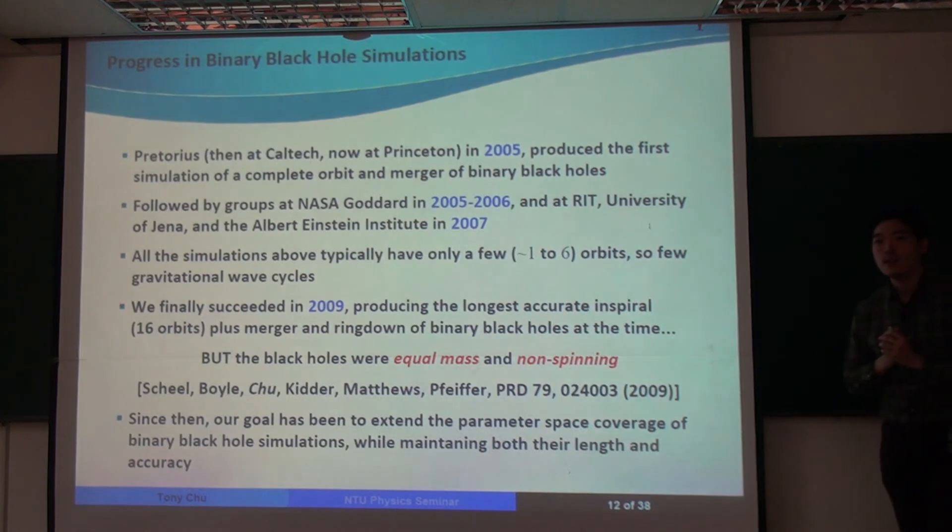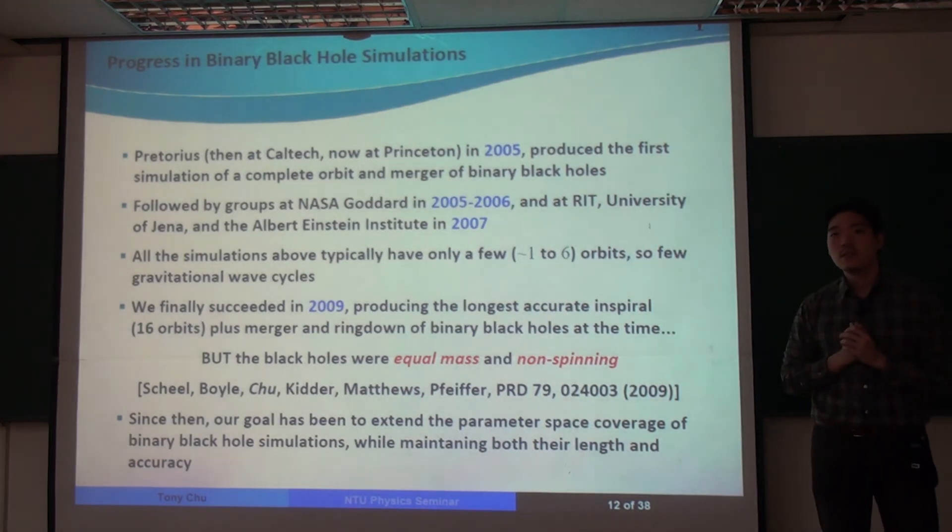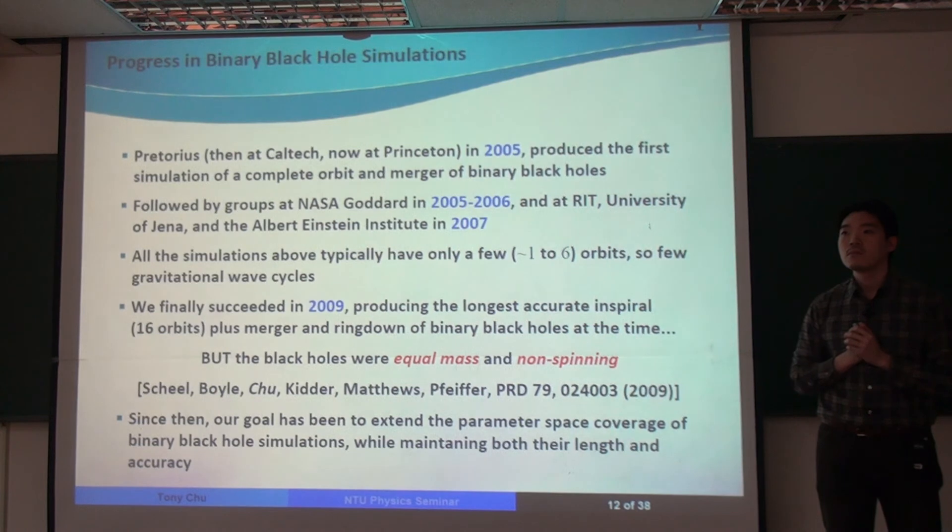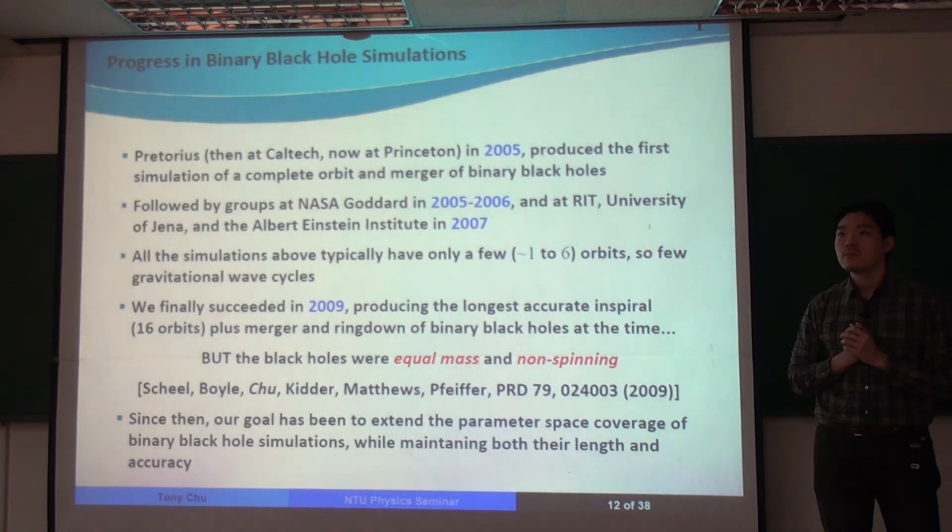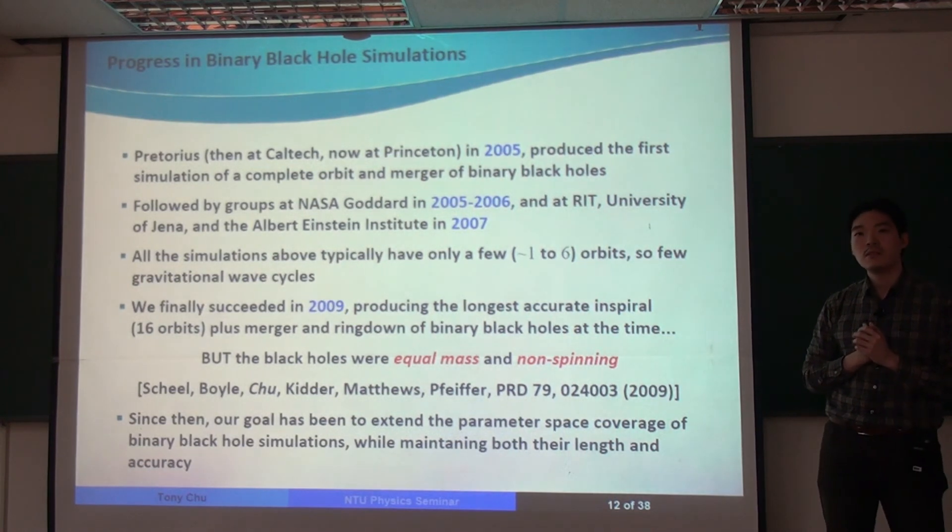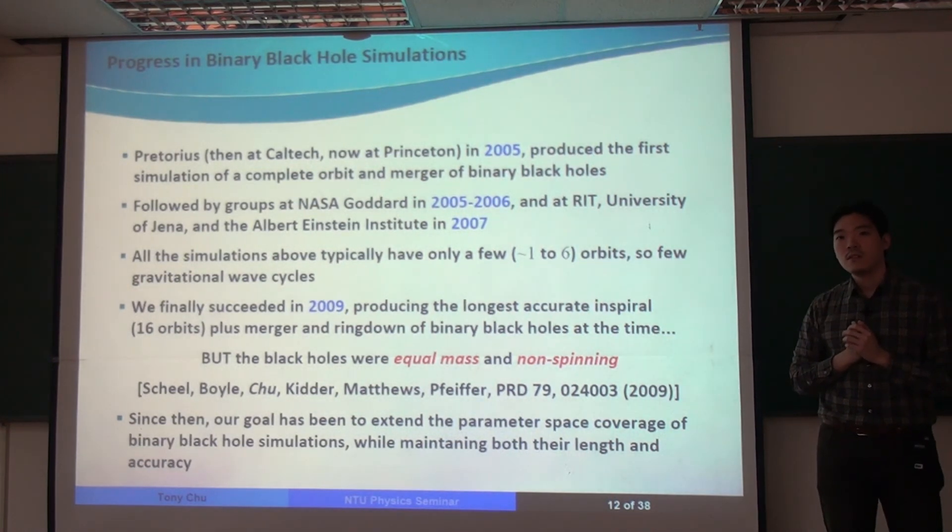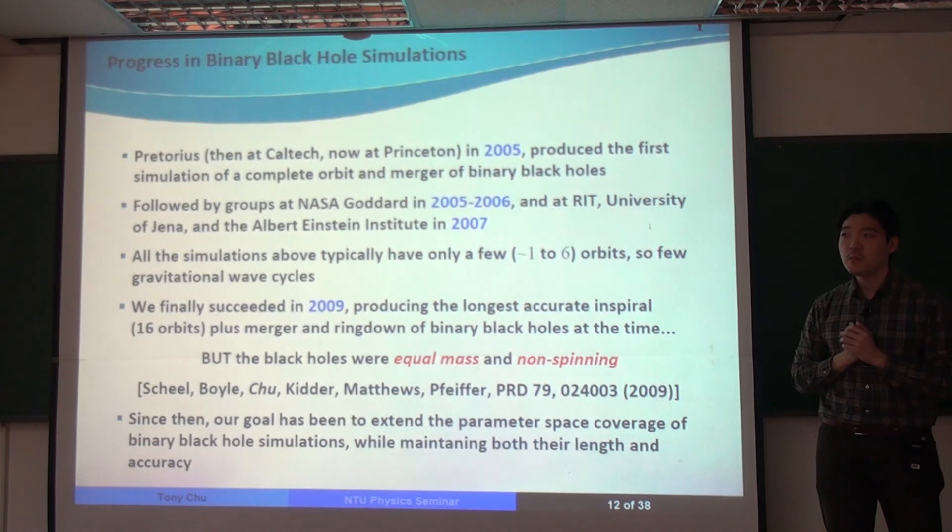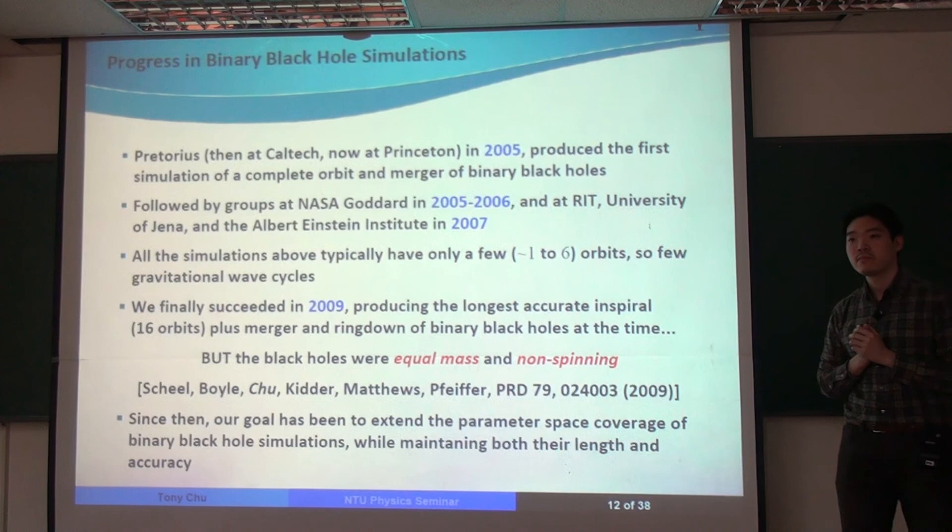I think one can estimate that because the arm is 4 kilometers, and the black hole size is about 1 kilometer. So when they are about to merge, the wavelength is also about 1 kilometer or so. So LIGO is aiming for almost the last orbit, the last few orbits. I think that's true, because that's also where the signal is strongest.